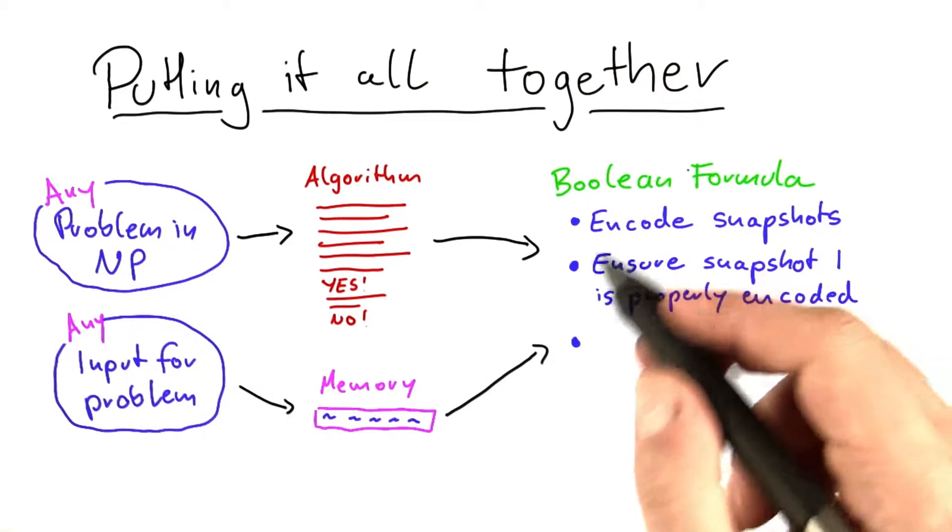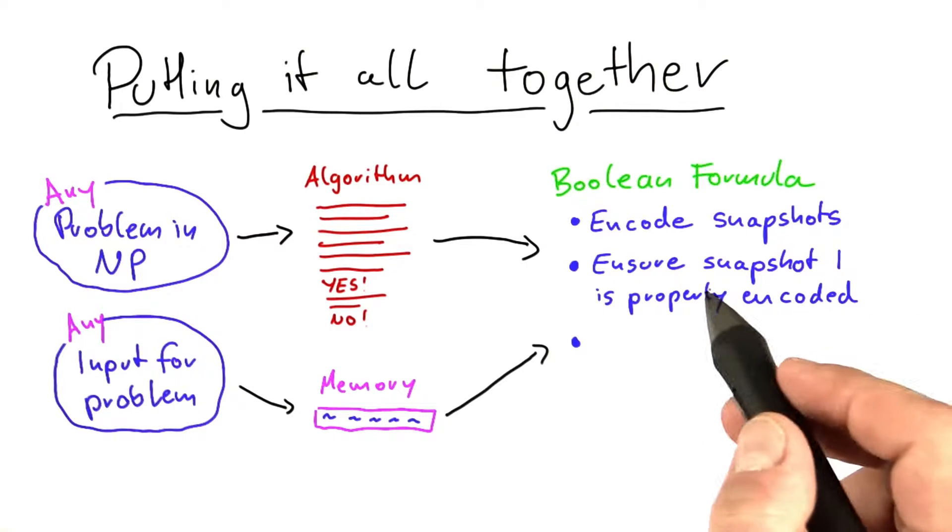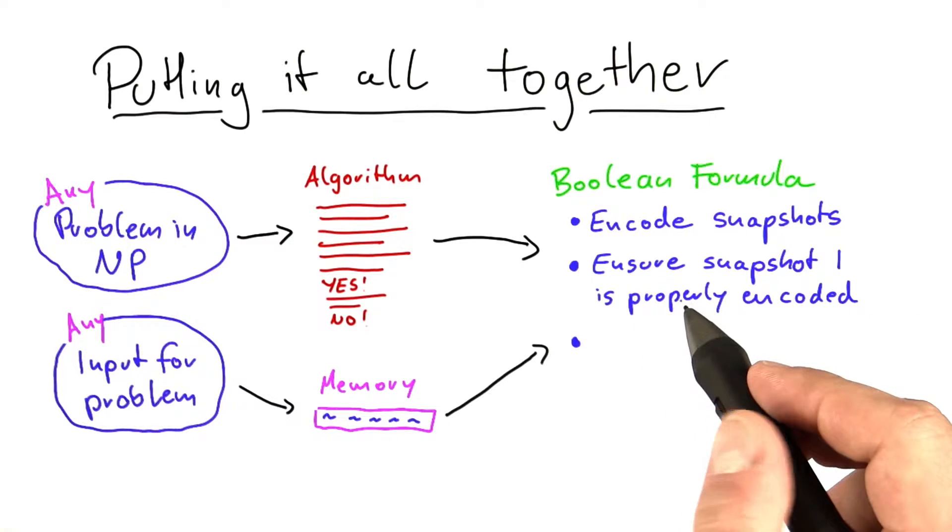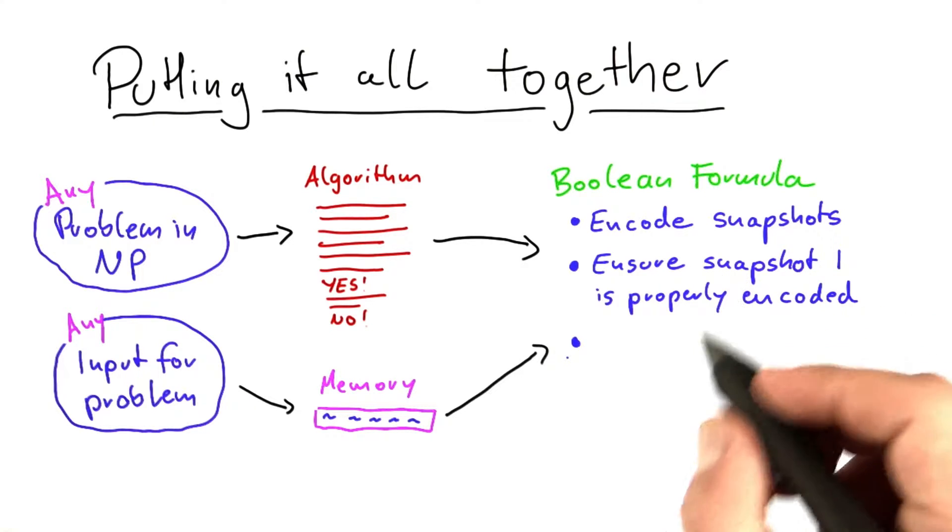Then what we just discussed is that through a number of rules that look like if then, you can ensure that the snapshots at a certain point in time t and at the following time point fit together.